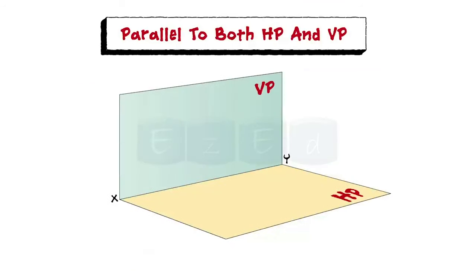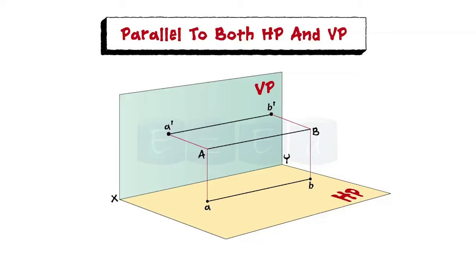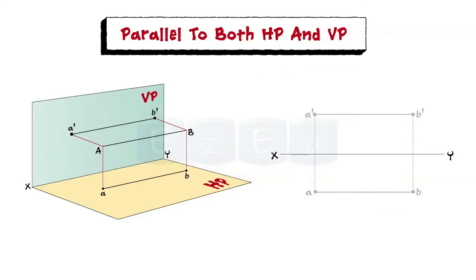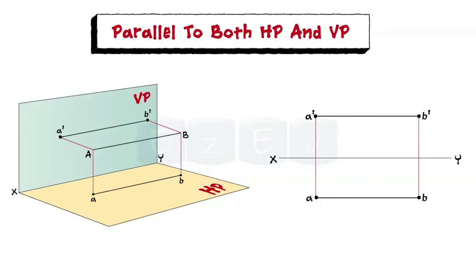Let us see a line which is parallel to both HP and VP. For this case, line AB is parallel to both HP and VP as shown, and its orthographic pattern is also shown. In this case, the front view and top view are both parallel to the line XY and both show the true length AB.